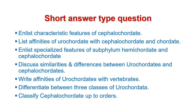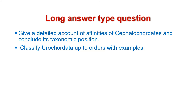The third category of questions are long answer type questions, which are descriptive in nature. The first question from this category is: give a detailed account of the affinities of Cephalocordates and conclude its taxonomic position. Next is: classify Cephalocordata up to orders, with examples.